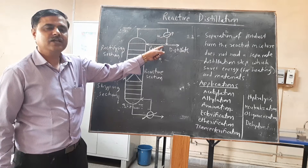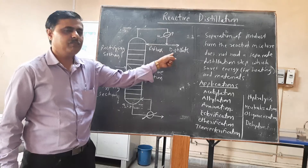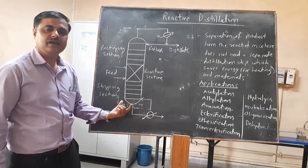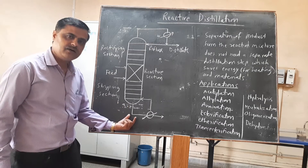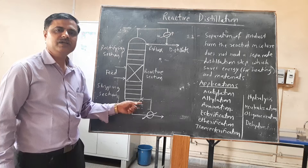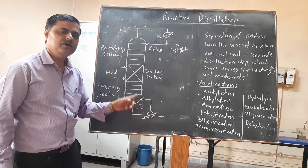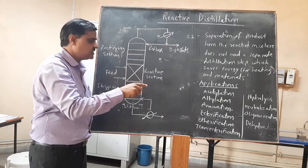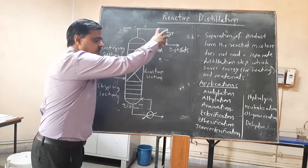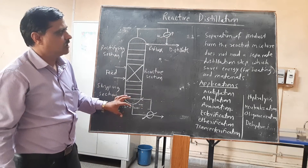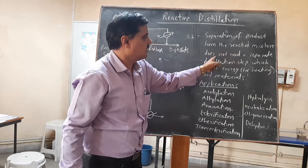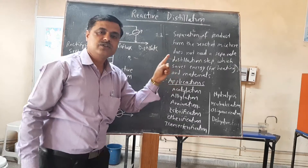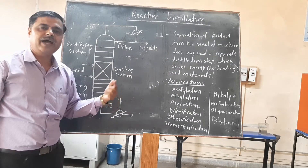A condenser is provided. Partly the liquid returns to the column — we call it the reflux — and partly you get it as a product at the top, which we call the distillate. At the bottom, the less volatile component is obtained at the bottom of the column. Partly it is sent back to the column for a greater degree of separation. In conventional distillation the reactive section is not there, but in reactive distillation, the reactive zone is also present and the separation also takes place. Separation of the product from the reaction mixture does not need a separate distillation step, which saves energy for heating as well as material.